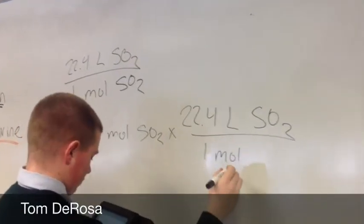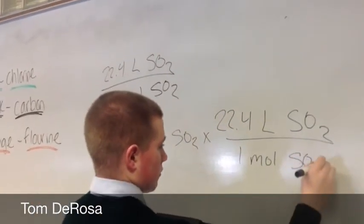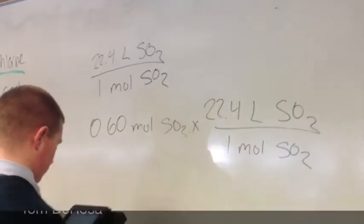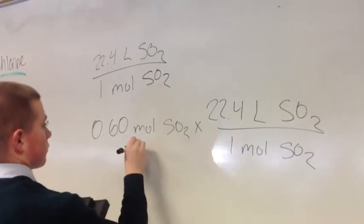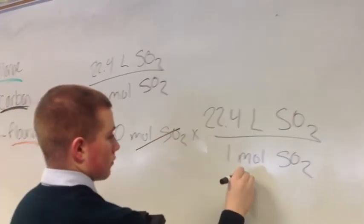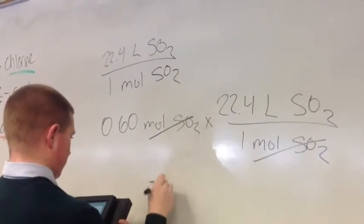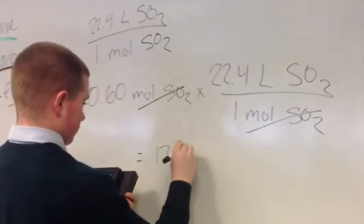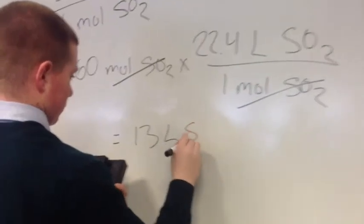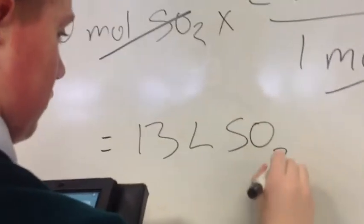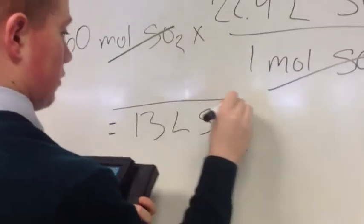This is calculating gas quantities at standard temperature and pressure. For this, we're going to use sulfur dioxide. The number of moles to be used is 0.6 moles. The conversion factor is 1 mole of sulfur dioxide equals 22.4 liters of sulfur dioxide. We identify the conversion factor by putting 22.4 liters of sulfur dioxide above 1 mole of sulfur dioxide.